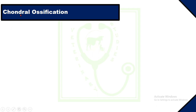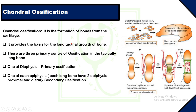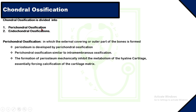Another type of ossification is chondral ossification. Chondra means cartilage, so it is the process of bone development from cartilaginous tissue. Chondral ossification provides the basis for longitudinal growth of bones — long bones such as the femur and humerus are developed by chondral ossification. Chondral ossification has a center of ossification from where ossification starts. There are three primary centers of ossification in a typical long bone: one at the diaphysis, which is the primary site, and one at each epiphysis, which act as secondary sites.